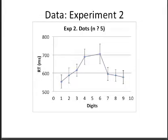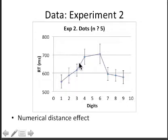Here are the data from 10 participants who completed experiment 2. We see an even clearer numerical distance effect, where reaction time is slower when the number of dots is closer to the reference point, than when it is farther away.